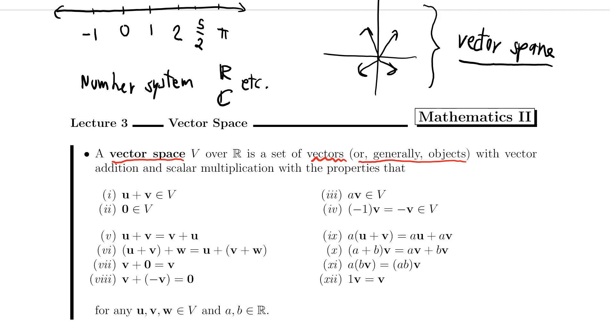And what we need is that we want to be able to add two vectors together. We want vector addition, and we also want scalar multiplication. We want to be able to multiply a vector by a scalar, by a number in R. So we are going to call any set that has these 12 properties a vector space.